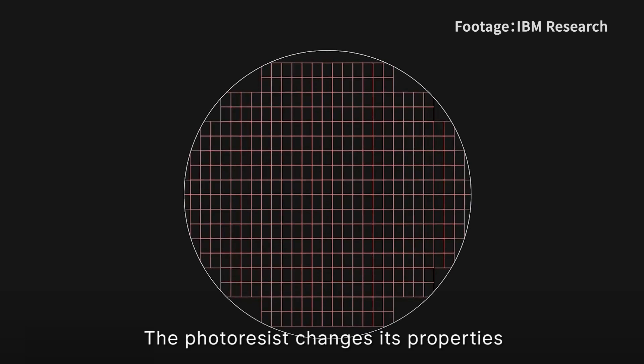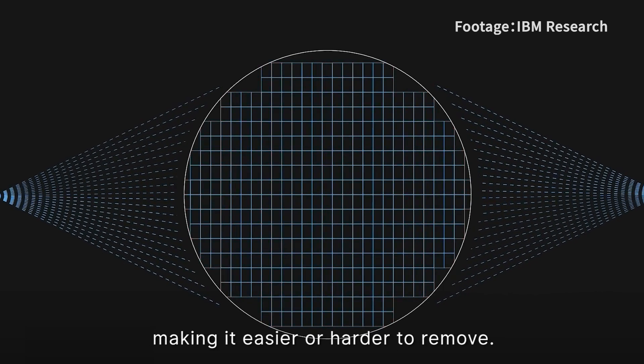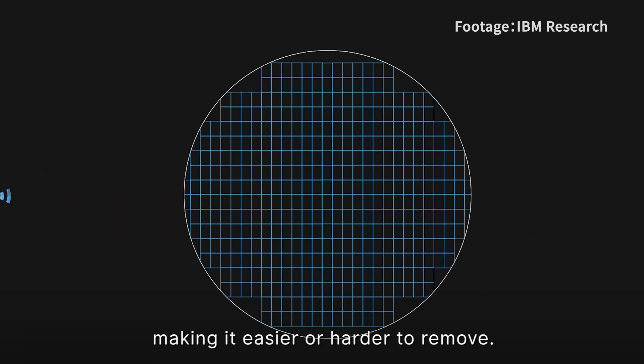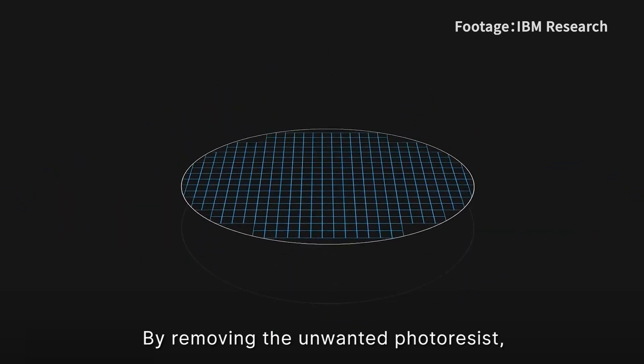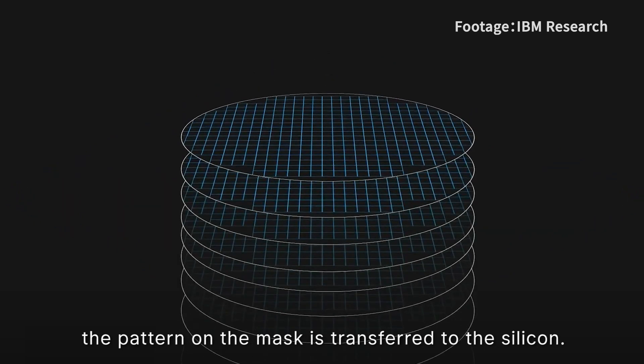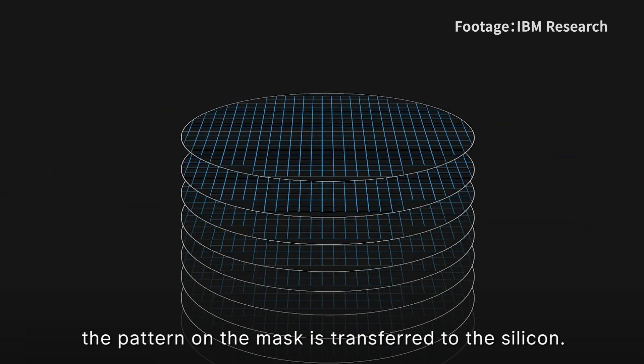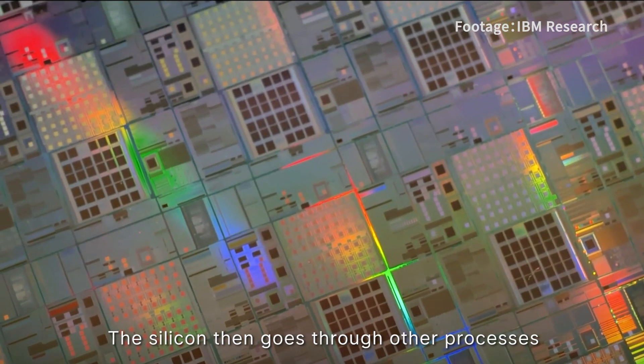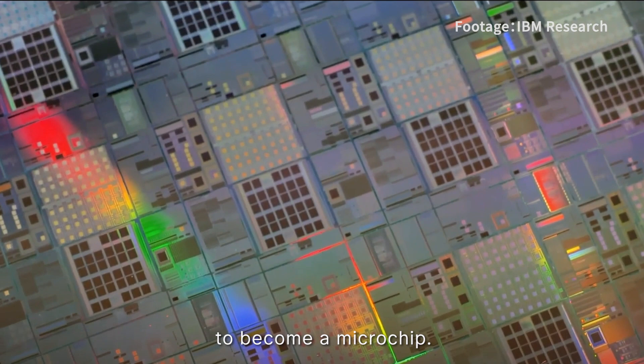The photoresist changes properties when exposed to light, making it easier or harder to remove. By removing the unwanted photoresist, the pattern on the mask is transferred to the silicon. The silicon then goes through other processes to become a microchip.